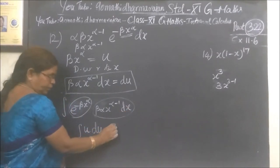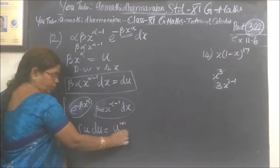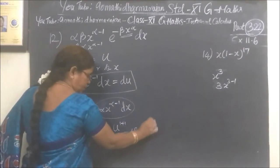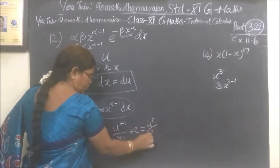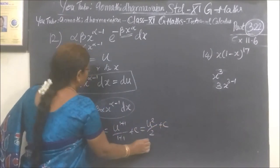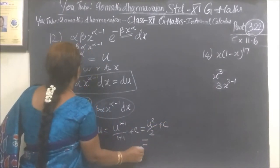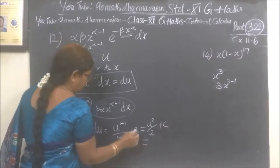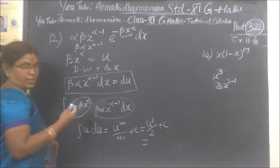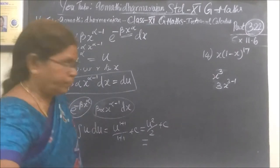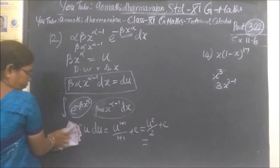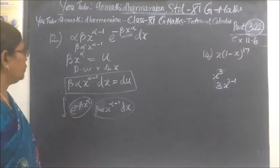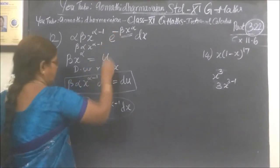This is the integration: u power n plus 1 by n plus 1 plus c. That is equal to u square by 2 plus c. u is beta x power alpha minus 1. That is e power minus, integral e power minus.